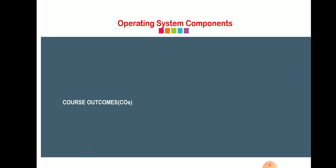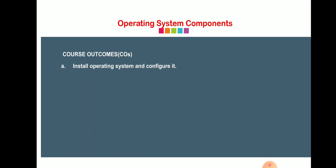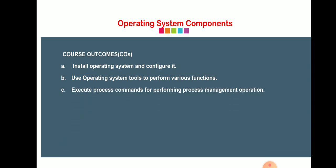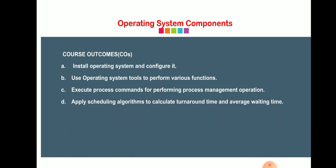First, we have to discuss the Course Outcomes of an Operating System. A: Installing the Operating System and configuring it. B: Using an Operating System tool to perform various functions. C: Execute process commands for performing process management operations. D: Apply scheduling algorithms to calculate turnaround time and average waiting time.